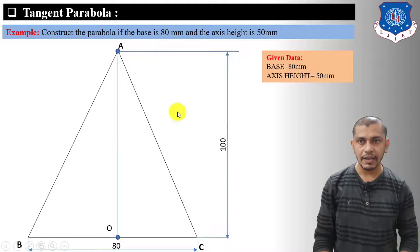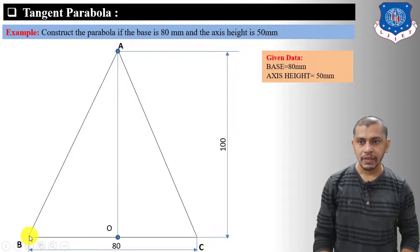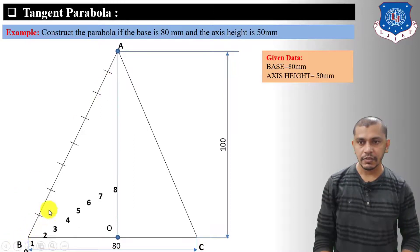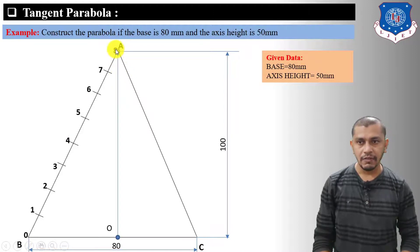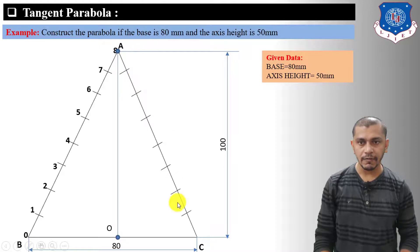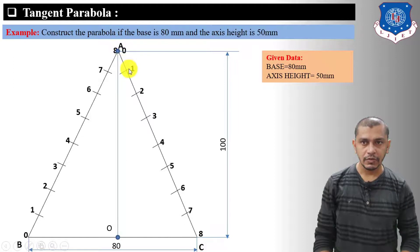After connecting AB and AC, divide AB into eight equal number of divisions: 0, 1, 2, 3, 4, 5, 6, 7, 8. Divide AC into eight equal number of divisions as well, but give the numbering starting from A: 0, 1, 2, 3, 4, 5, 6, 7, 8.